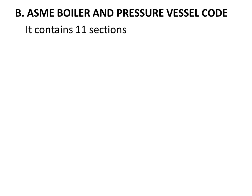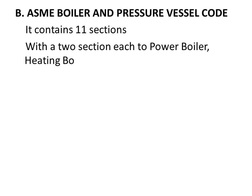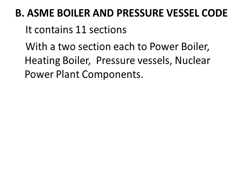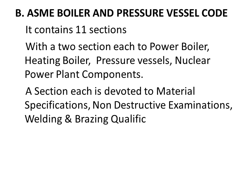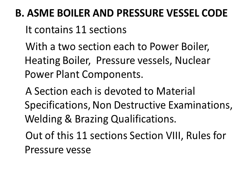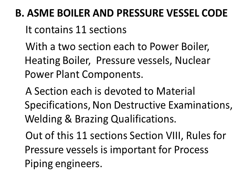For the Boiler and Pressure Vessels Code, it contains 11 sections altogether, with two sections each for power boilers, heating boilers, pressure vessels, and nuclear power plant components. A section each is attributed to material specifications, non-destructive examinations, and welding and brazing qualifications — making 11 sections in all. Out of these 11 sections, Section 8, that is the rules for pressure vessels, is important for process piping engineers.